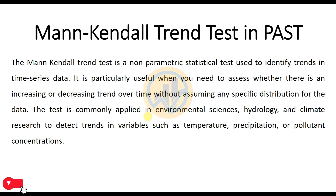What is the Mann-Kendall trend test? The Mann-Kendall trend test is a non-parametric statistical test used to identify trends in time series data. It is particularly useful when you need to assess whether there is an increasing or decreasing trend over time without assuming any specific distribution for the data. The test is commonly applied in environmental science, hydrology, and climatic research to detect trends in variables such as temperature, precipitation patterns, or